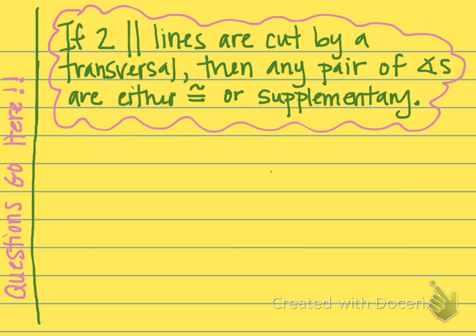This next theorem is so important to remember, and I'm going to draw a picture in a minute that can help you remember it. It says if two parallel lines are cut by a transversal, then if you pick any pair of two angles, they will either be congruent or they will be supplementary.